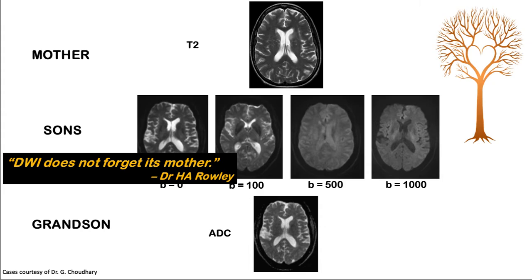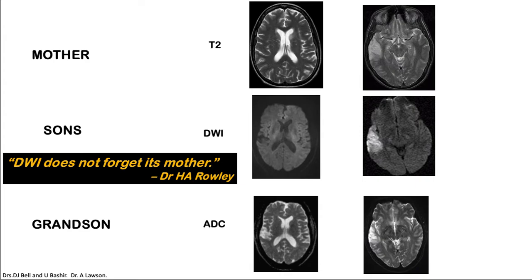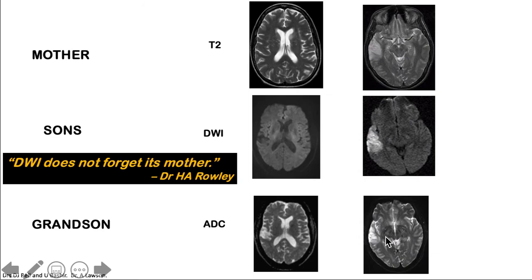Another concept is that the DWI does not forget about its mother. It means that if there is high T2 signal on T2, that signal will spill over or reflect within the DWI sequence. For example, this area in the right temporal lobe has a T2 hyperintense signal as well as a DWI hyperintense signal, but when we check the ADC map, there is no corresponding drop. Therefore, this is what we call T2 shine-through.